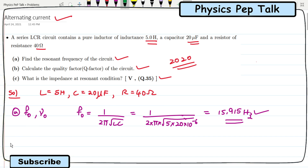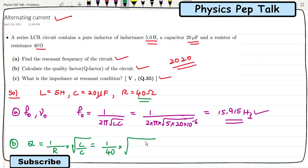In part B they have asked us to find out the quality factor Q. Remember this formula: Q is equal to 1 by R into root of L by C. So 1 by 40 into root of 5 henry by 20 microfarad, which is 20 into 10 power minus 6. On substituting all these values I get the quality factor to be equal to 12.5. This is the required solution for part B.